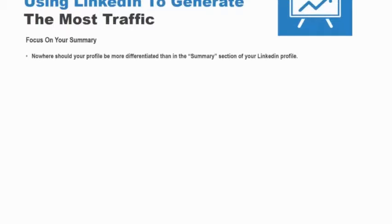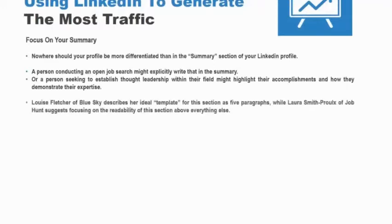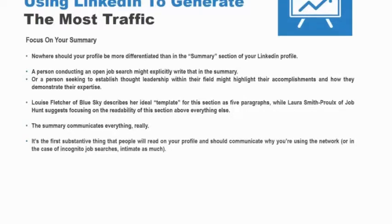Focus on your summary. Nowhere should your profile be more differentiated than in the summary section of your LinkedIn profile. This is your opportunity to describe yourself in the context that you want to use the network. For instance, a person conducting an open job search might explicitly write that in the summary. Or a person seeking to establish thought leadership within their field might highlight their accomplishments and how they demonstrate their expertise. Louise Fletcher of Blue Sky describes her ideal template for this section as five paragraphs, while Laura Smith-Prol of Job Hunt suggests focusing on the readability of this section above everything else. The summary communicates everything — it's the first substantive thing that people will read on your profile and should communicate why you're using the network.